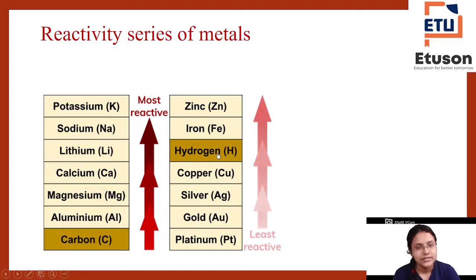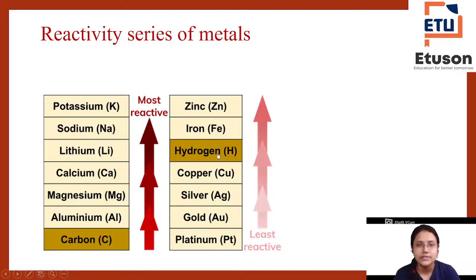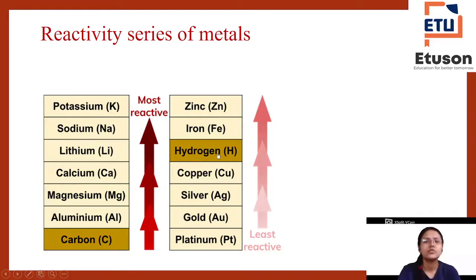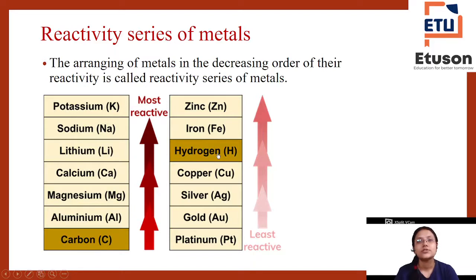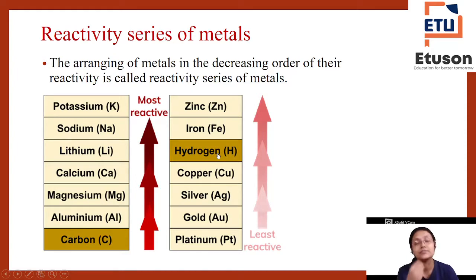Next comes lithium, which is a bit less reactive. Then calcium, magnesium, and aluminium. Carbon is less reactive than those, and platinum is the least reactive. So arranging metals in descending order of reactivity is called the reactivity series of metals — from most reactive to least reactive. Potassium is the most reactive and platinum is the least reactive in this series.